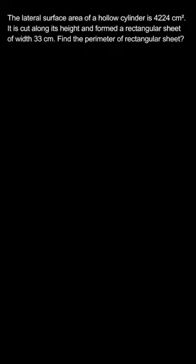The formula for perimeter is 2 into l plus b, meaning length and breadth, or width and height of the rectangle.